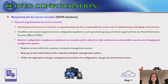Operational groups should monitor configuration compliance and implement an exception policy tailored to their environment. Each operational group must establish a process for changing configuration guides, including review and approval by the chief information security officer. Servers must be registered within the enterprise management system, and that information must be kept up to date.